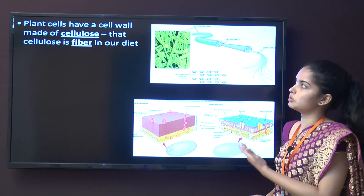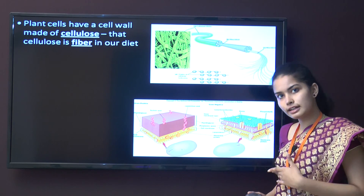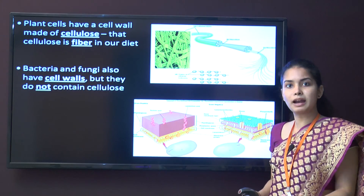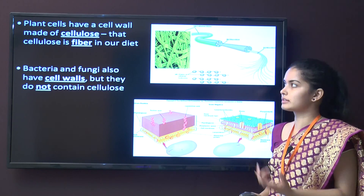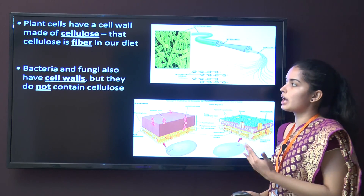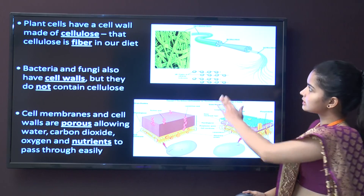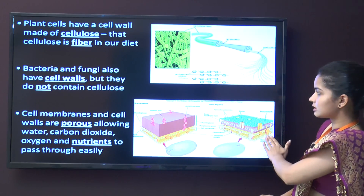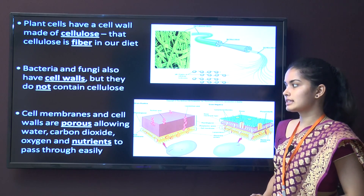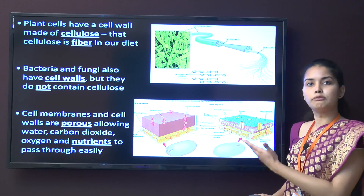The plant cell wall is made up of cellulose, and cellulose is a fiber that is usually used in our diet. Whenever we consume a plant substance, we get fiber in our diet. Bacteria and fungi also have cell walls but they do not contain cellulose. Cell membranes and cell walls are porous and allow transport of materials like water, carbon dioxide, and nutrients through them easily.